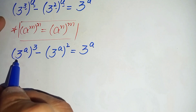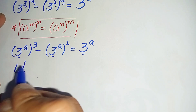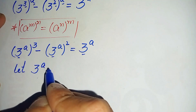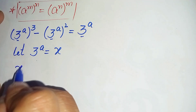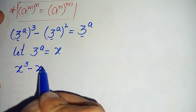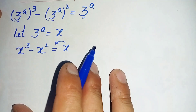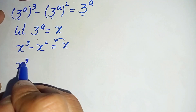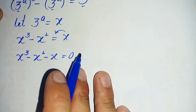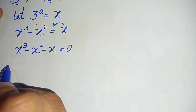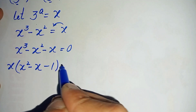Let us look into all the terms on both sides — here we have 3 raised to power a in the base. So we will make a substitution: let 3 raised to power a equal x. Taking x to the left hand side gives negative x, so this equation becomes x cubed minus x squared minus x is equal to 0.